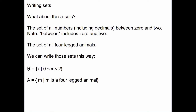For the first one, we can say that R is the set of all real numbers x, so that x is between 0 and 2, or 0 is less than or equal to x, and x is less than or equal to 2. For the set of four-legged animals, we could write A is the set of all animals M, where M is a four-legged animal.